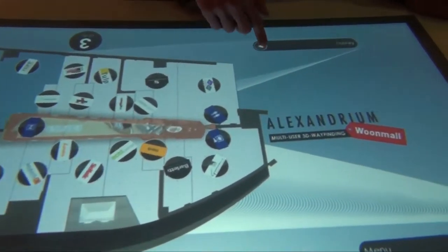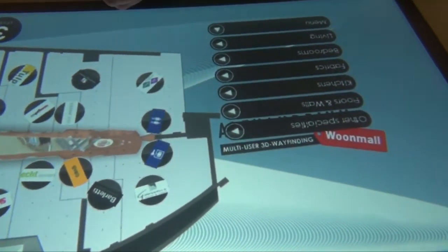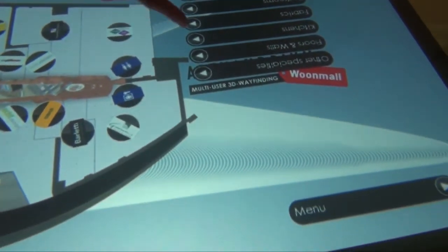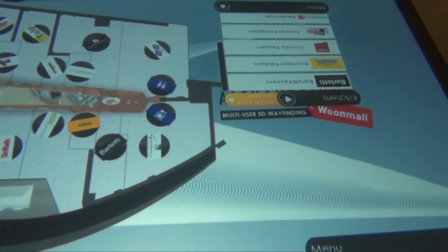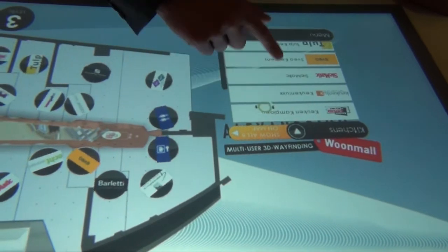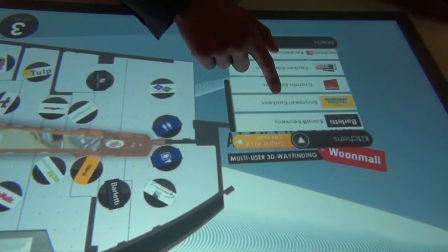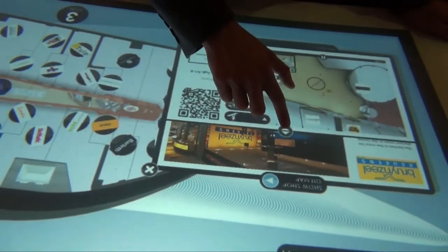A menu lets users choose shops by category. Simply touch one of the menu buttons at the border of the overview map. Here we see the list of shops offering kitchen equipment. Picking a shop from the list will open the same info window as seen before.